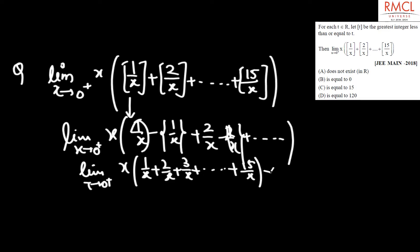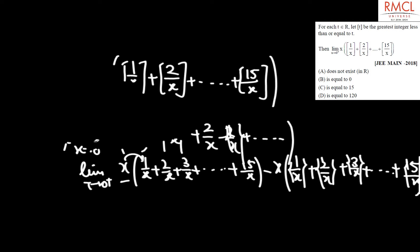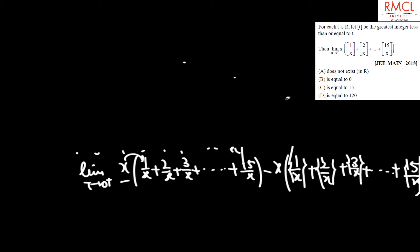Minus x into the fractional part terms. Taking the limit, this becomes 1 plus 2 plus 3 and so on. Plus limit x tending to 0 plus of x into the fractional part terms.